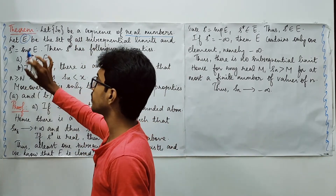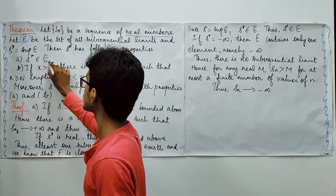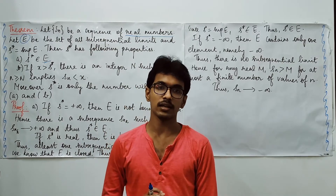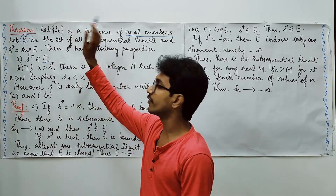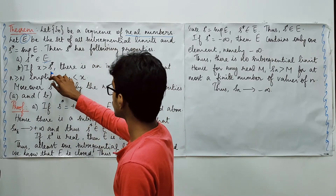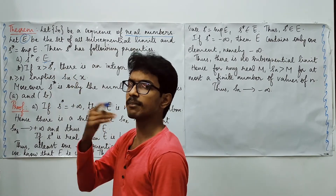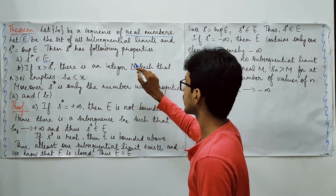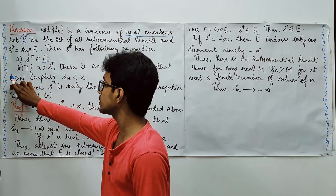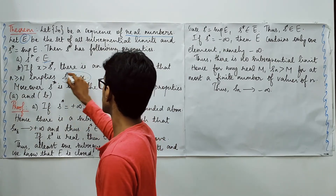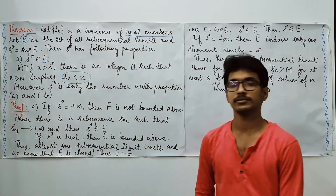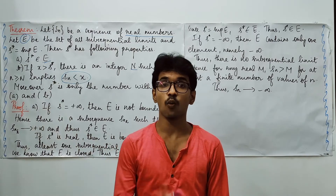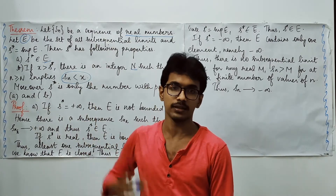The first property is that S upper star is a member of E — the supremum is also going to be one of the sub-sequential limits. In the second part, we prove that if we identify some element x bigger than S upper star, then we can find some integer N such that n ≥ N implies Sn < x. And S upper star is the only element with these two properties.